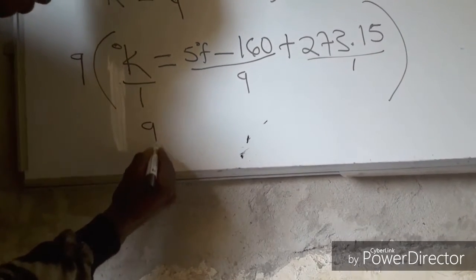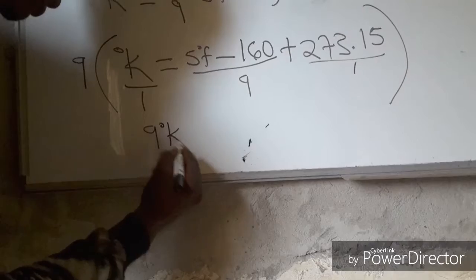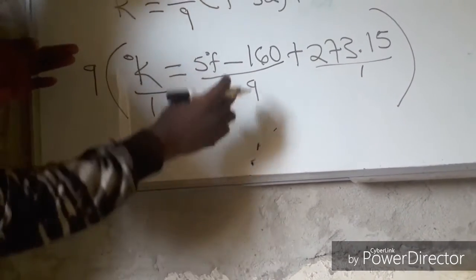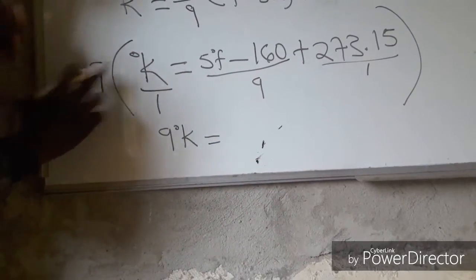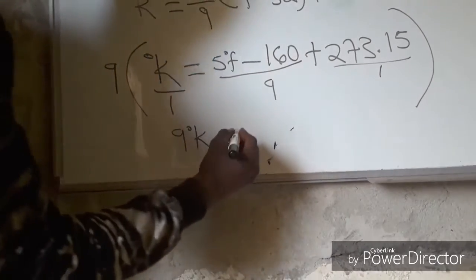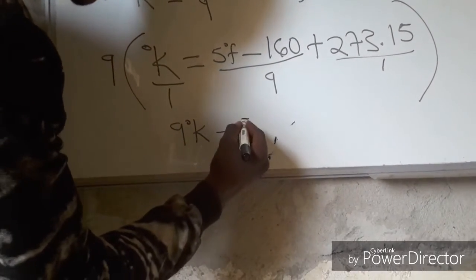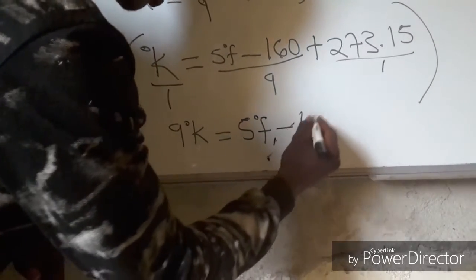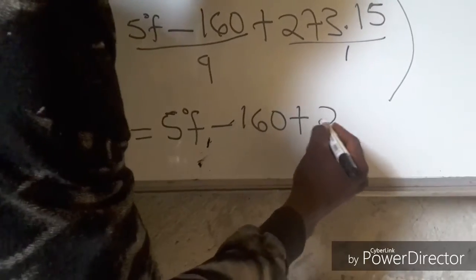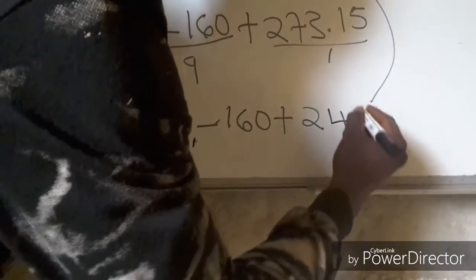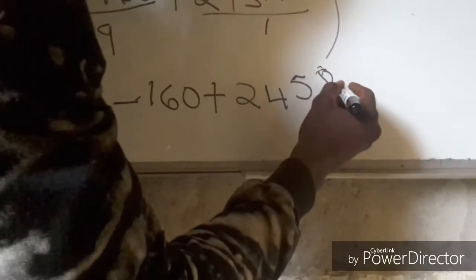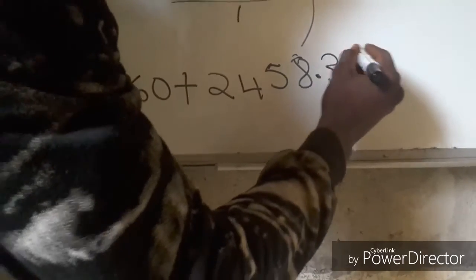We say, 1 going to 9, how many times? We give us 9 times. 9 times degree Kelvin, we give us 9 degree Kelvin. Then, we also say, it's equal to 9 going to 9, how many times? One time. Five, gives us 5 degree Fahrenheit minus 160. Plus, 2458.35.